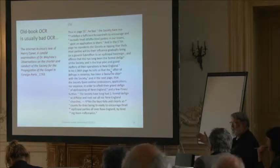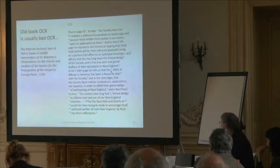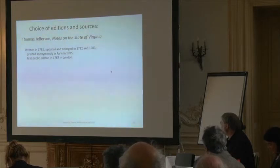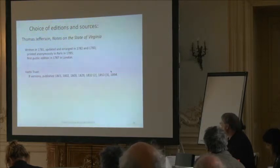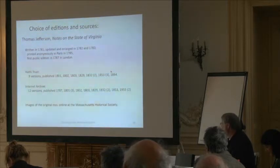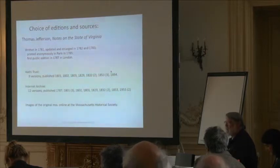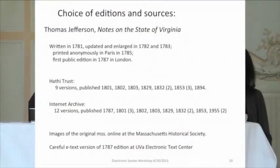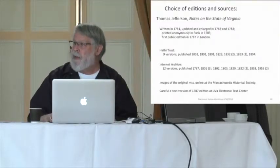They say, 'if we use language models, we would make some mistakes' — but they're already making lots of mistakes. There's also the issue of choice of editions and sources. For Thomas Jefferson's 'Notes on the State of Virginia,' written in 1781 and first published in Paris in 1785, the HathiTrust has nine versions published between 1801 and 1894, and the Internet Archive has 12 versions between 1787 and 1955. You don't want Jefferson's notes entered as composed in 1894. There are images of the original manuscript online at the Massachusetts Historical Society, and a careful e-text of the 1787 edition at the University of Virginia Electronic Text Center.